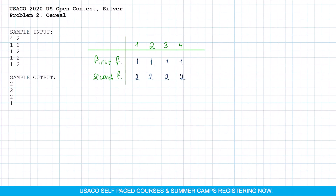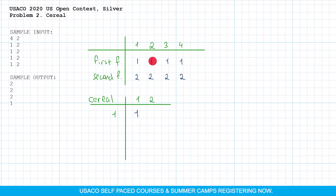There are two types of cereal. If we start with cow number 1, she will select cereal type 1 because it is her first choice. Then cow number 2 will try to select the first type of cereal, but it is already taken by cow number 1, so she is going to take cereal type 2. As long as all cereal types are used, other cows won't get any.